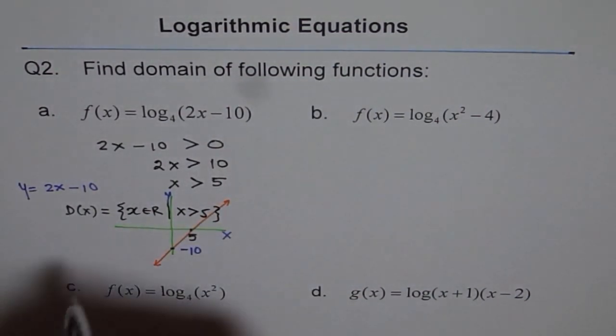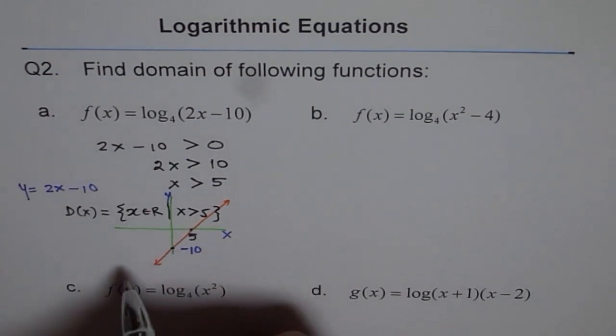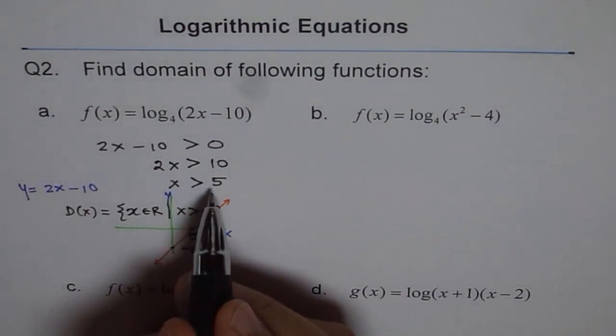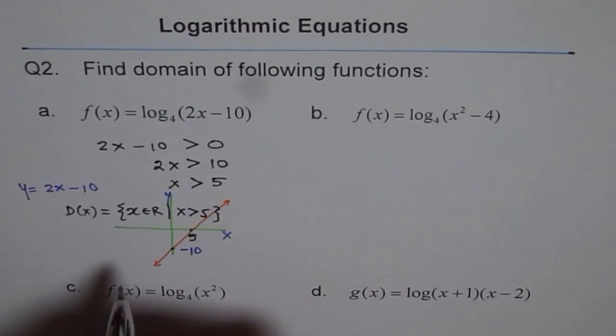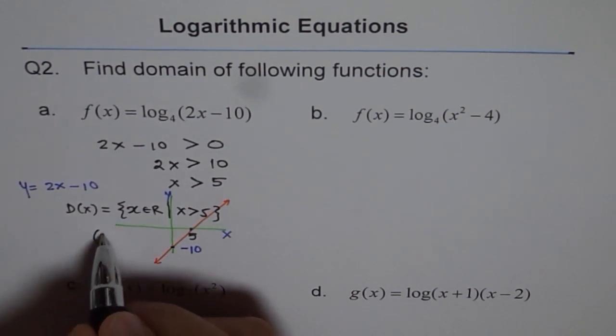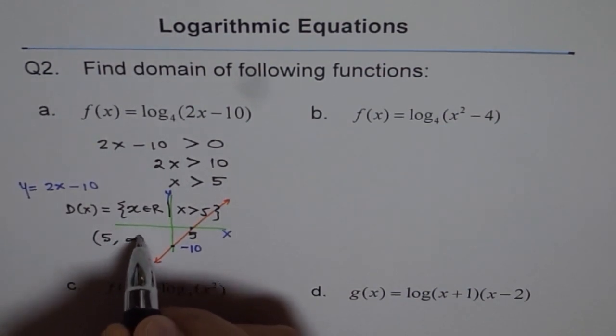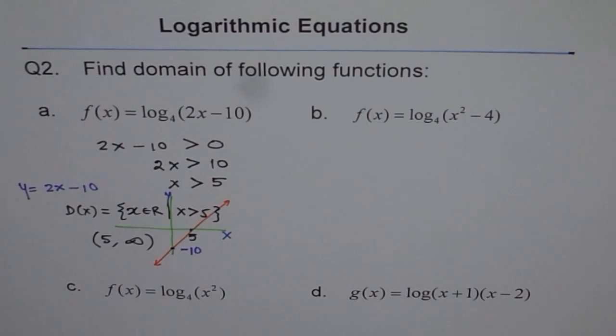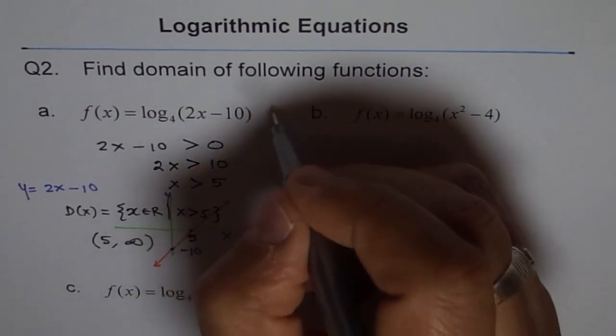The other way is that we could write as an inequality, just written like here. Or in interval notation, we write like this: from 5 to positive infinity, not including both of them. Remember, you can never include infinity. That's our solution for part A.